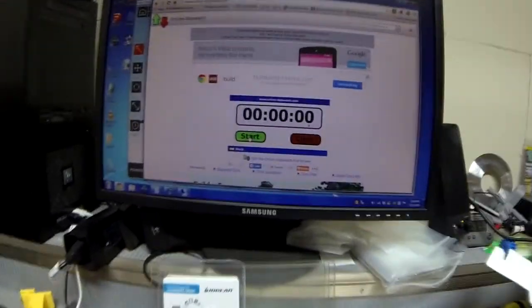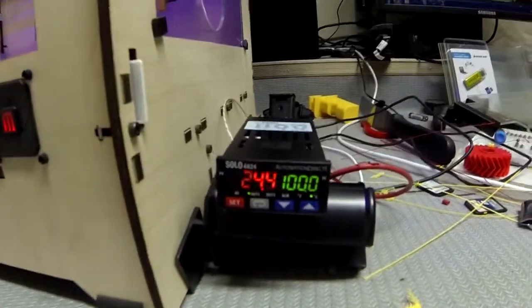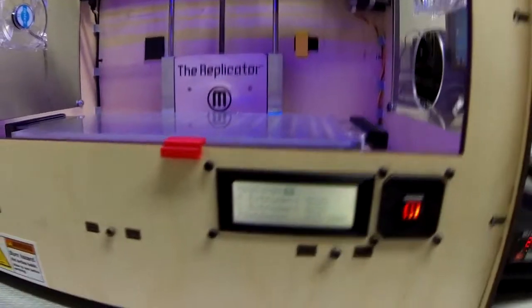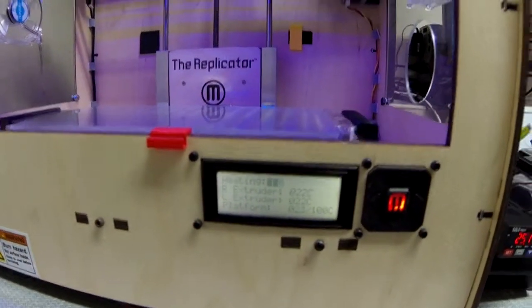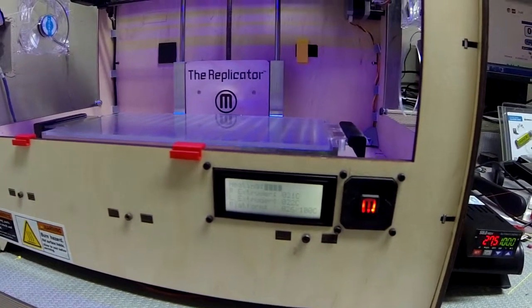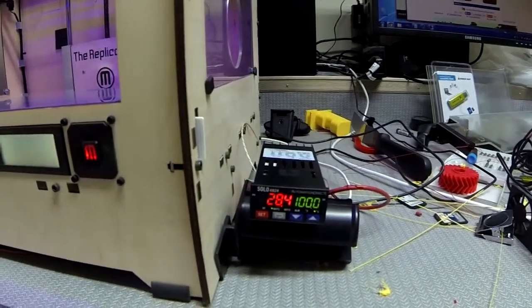And then over here, I'm going to start a stopwatch. And this thing hasn't quite there. Now that heater has kicked on and of course the MakerBot is kicked on. Now it's a little cool out here in the shop, about 67 degrees Fahrenheit. So you can see it begin its march up. I'm going to pause the video a little bit here.